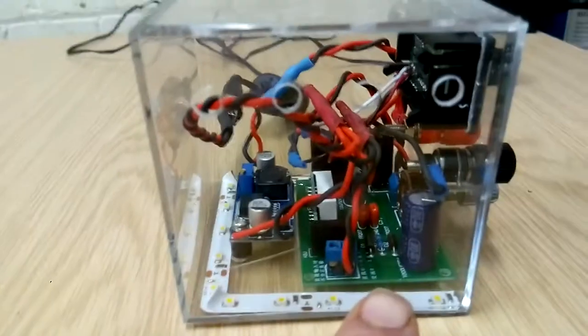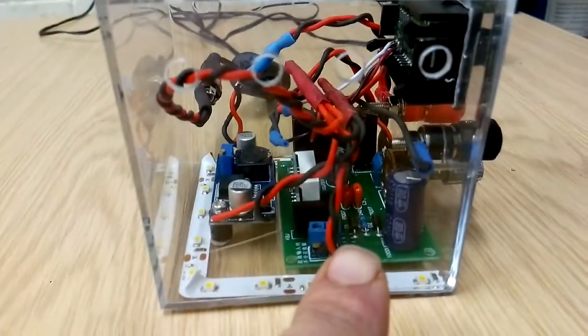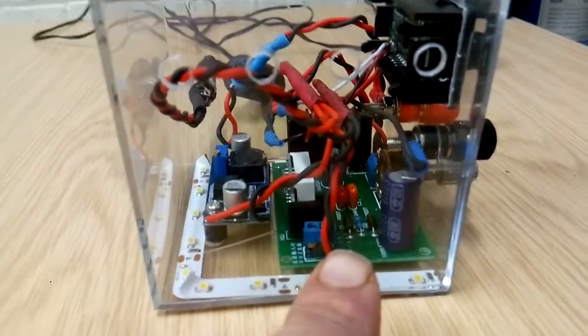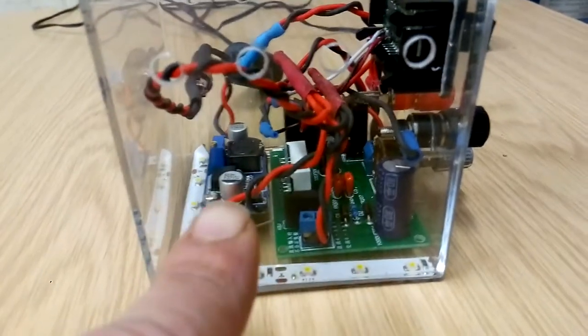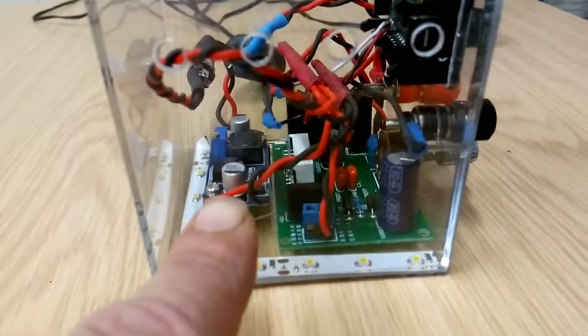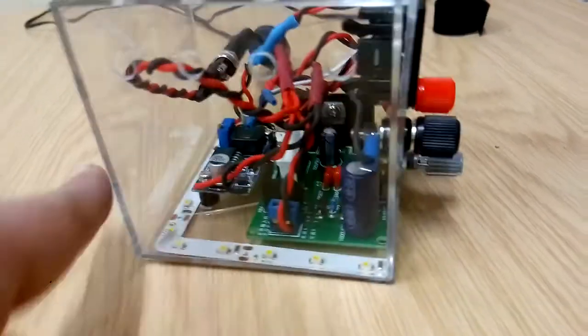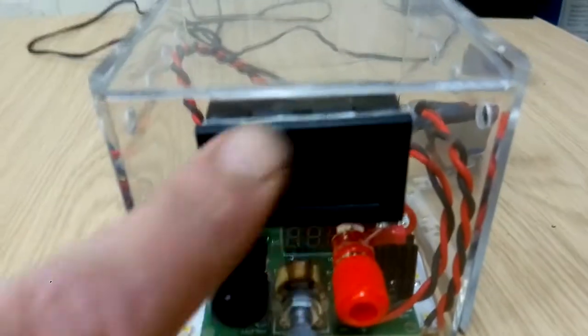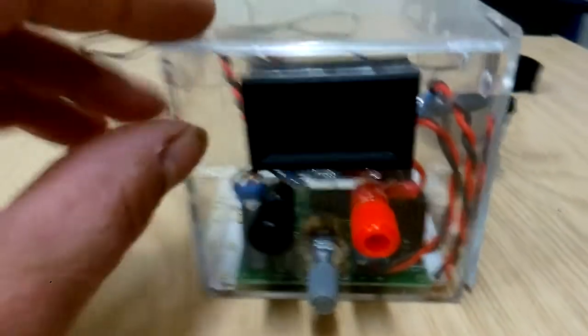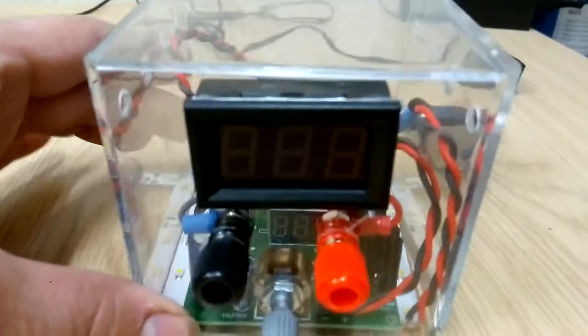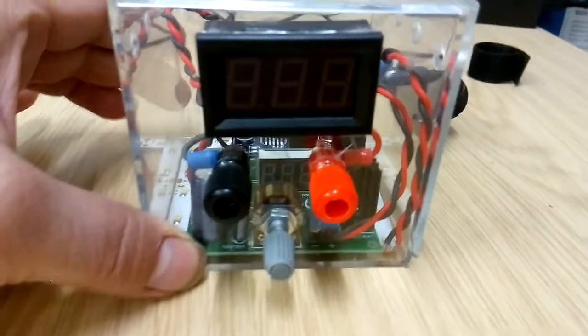It's quite a cheap build if you're prepared to wait and get the stuff direct from China. The main variable buck converter was probably three dollars, and the small one was one dollar including shipping from China. I've got three of these voltmeters direct from China - I think it was two dollars something for three of them. Then I just sourced this plastic case and put these extra bits in.